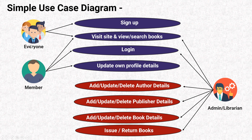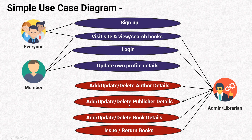Once a person signs up they become a basic member. They can visit and search books, log in, and update their own profile — providing basic details like email, name, and contact info. These are the member-level actions. The admin activities are shown in red: add, update, delete author details; add, update, delete publisher details. A normal member cannot do these — only the admin can access these features.